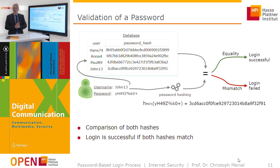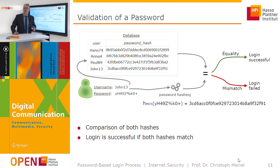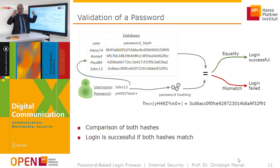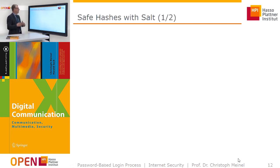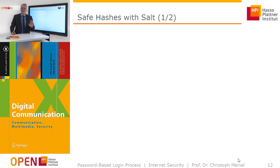A mismatch can also occur if you misspell your password when entering it. Then it is a different string, so the hash function produces a different result and there is no agreement between the two hashes. In this way, the digital identity can be secured.